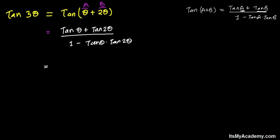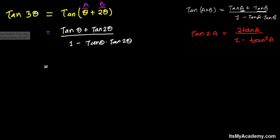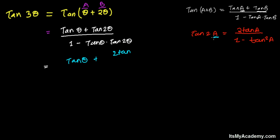We need to apply the formula for tan(2 theta) in these two places. As we have already learned, tan(2a) equals 2 tan(a) divided by 1 minus tan squared(a). So putting the value: in the numerator it becomes tan(theta) plus 2 tan(theta) divided by 1 minus tan squared(theta).